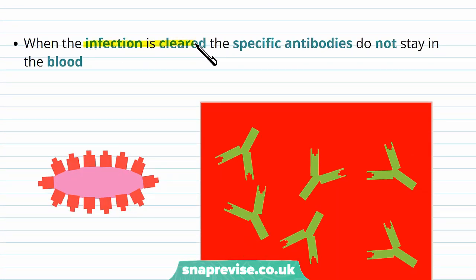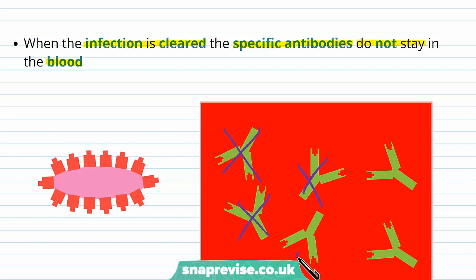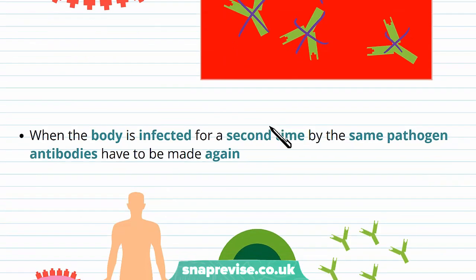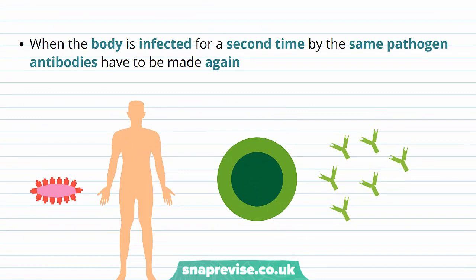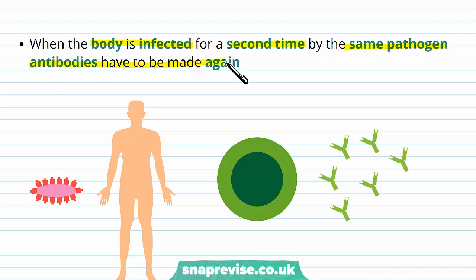Eventually when the infection is cleared and all the pathogens are dealt with, the specific antibodies which we used don't stay in the blood — they wear down and are eliminated. However, this doesn't mean that we completely forget about this pathogen. When the body is infected for a second time by that same pathogen with the same antigens, those antibodies have to be made again.